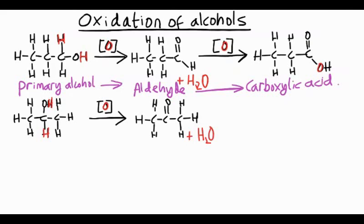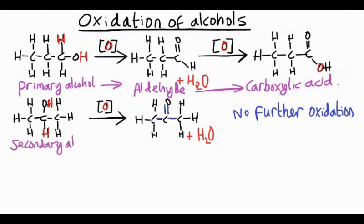But can this reaction go any further? Well, if you wanted to go to an acid, you'd need to break a carbon-carbon bond. So under these conditions, we can't carry out any further oxidation of a ketone. So overall, we took a secondary alcohol, oxidized it, and we got to a ketone, but we can't get any further oxidation.